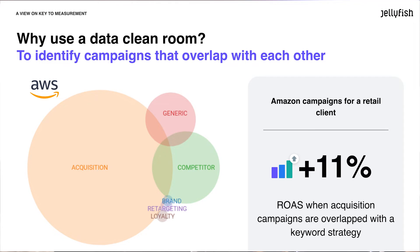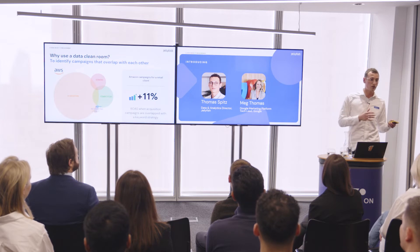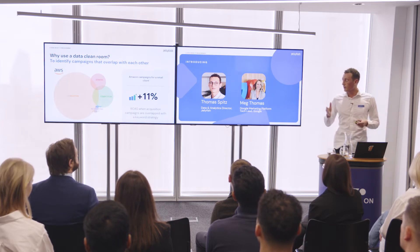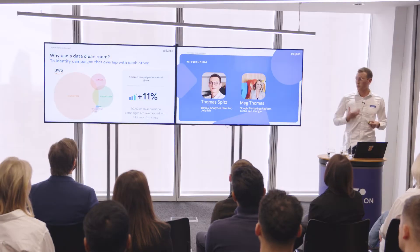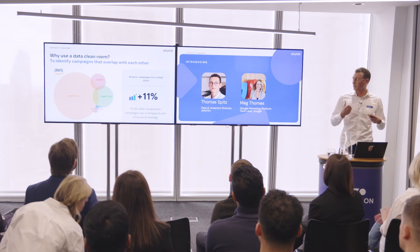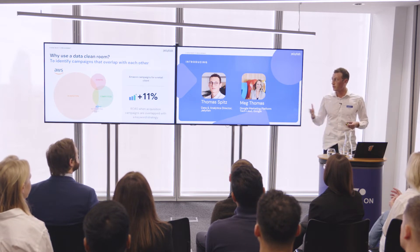So what can we actually do with that? Why is it useful? The first example is one we made with a client on Amazon, who had a lot of different strategies on Amazon — keyword, acquisition, etc. We used the data clean room to understand the relationships between all those different campaigns. It helped us understand that some overlap was really good — for example, a good overlap with acquisition on keyword campaigns was improving the ROAS — but some other overlaps were destroying value. Through this analysis, we were able to identify and eliminate those harmful overlaps.